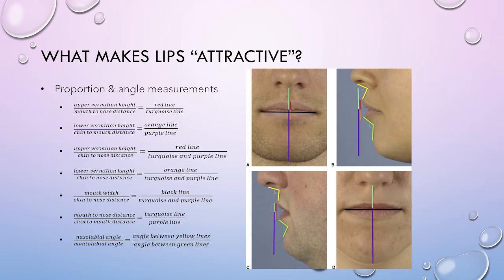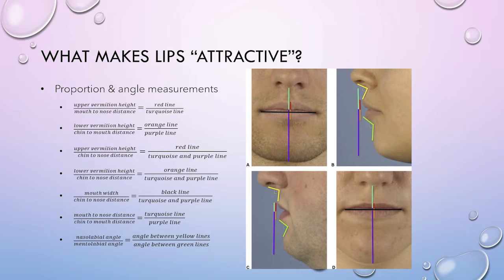These are the proportion and angle measurements the authors based their study on. The red line refers to the upper vermilion height, the turquoise line is the mouth-to-nose distance, the orange line is the lower vermilion height, the black line is the mouth width, and the purple line is the chin-to-mouth distance. The angle indicated in yellow is the nasolabial angle, and the angle between the green lines is the mentolabial angle.